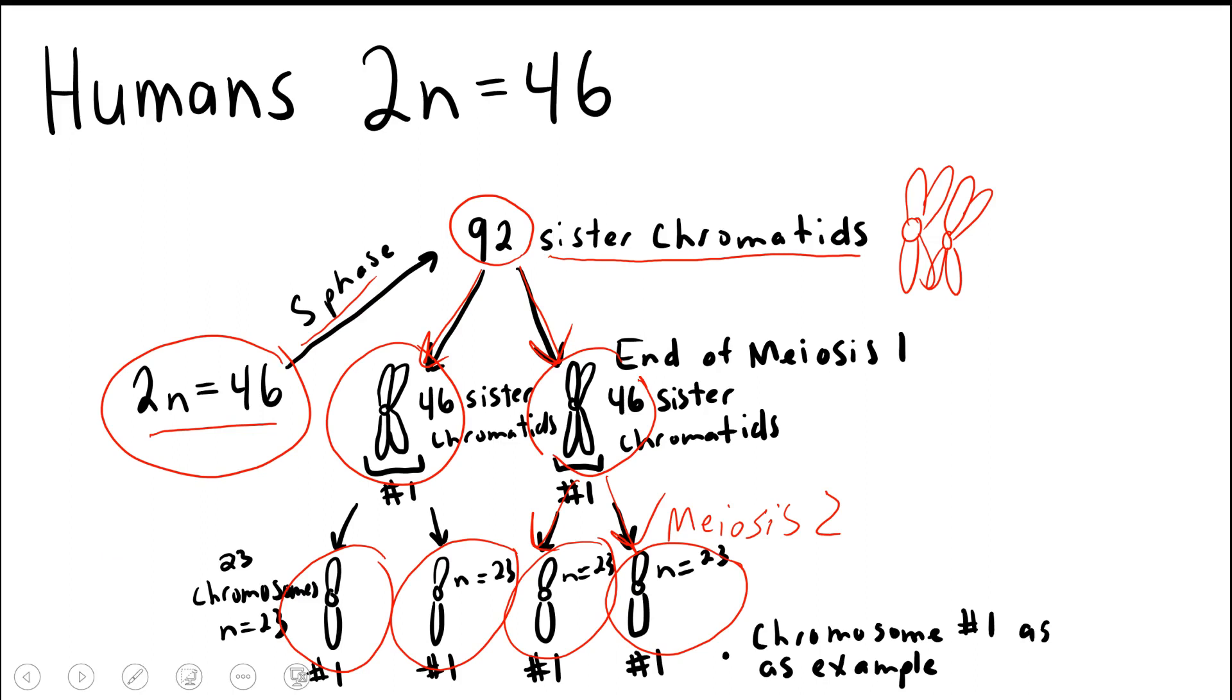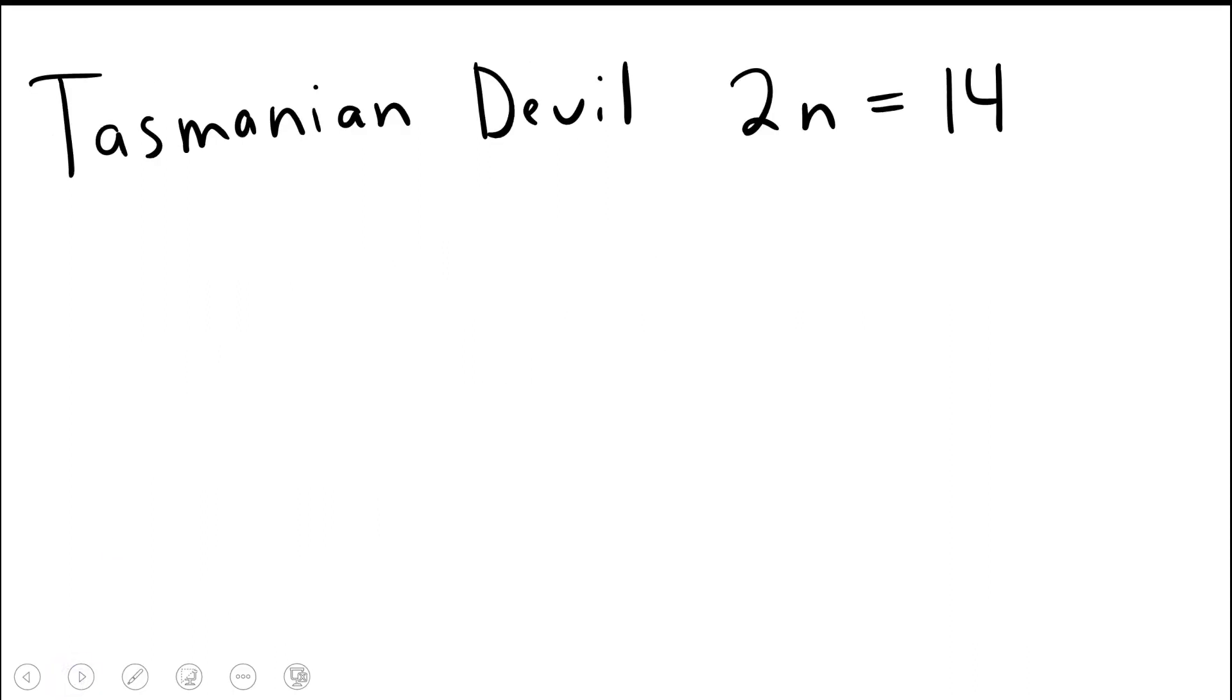So let's take a look at some additional examples here. The Tasmanian devil has a 2N of 14. So let's draw out the process of meiosis from the chromosomal perspective and see how it changes as you go through the two rounds of meiosis.